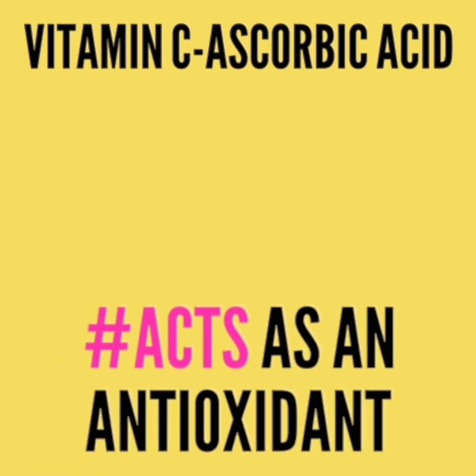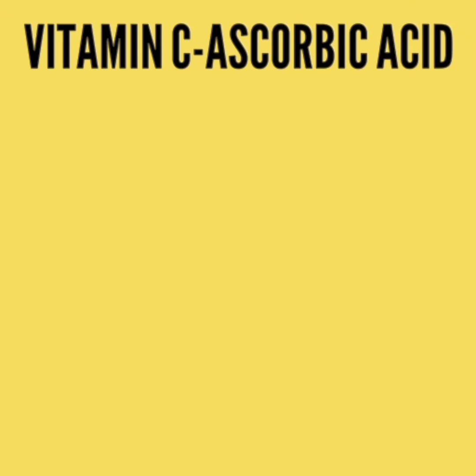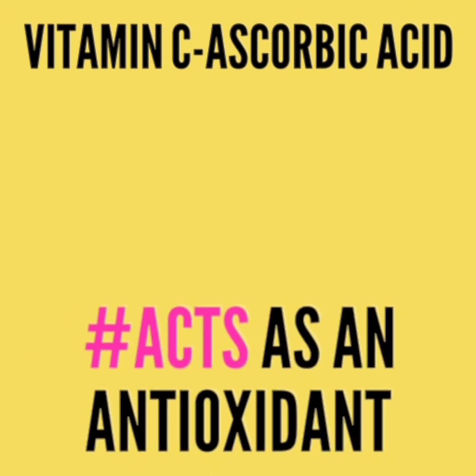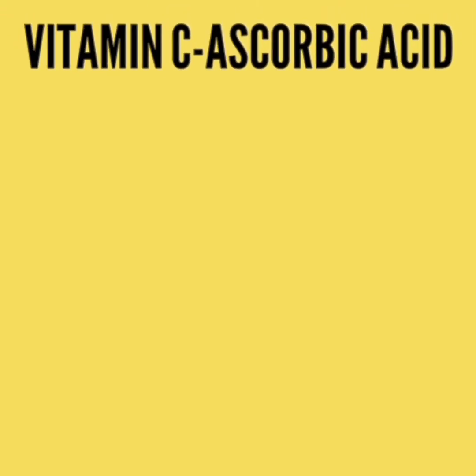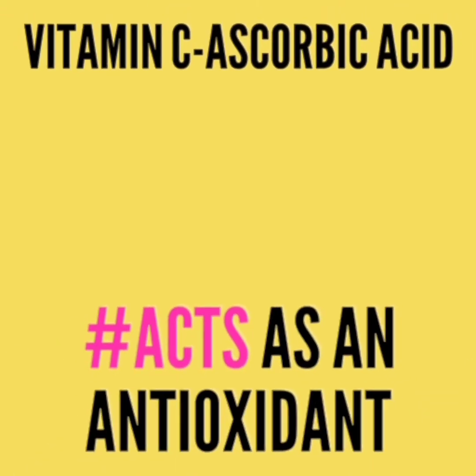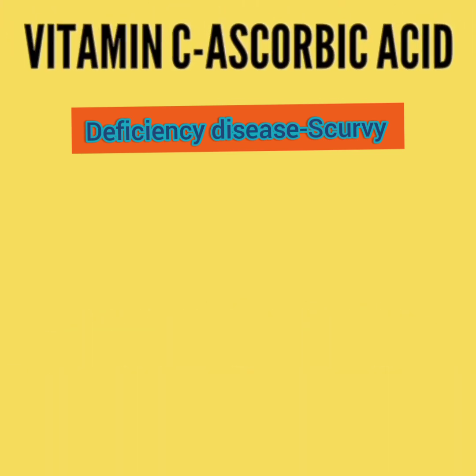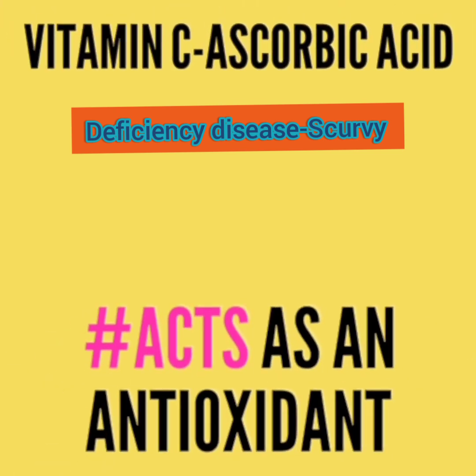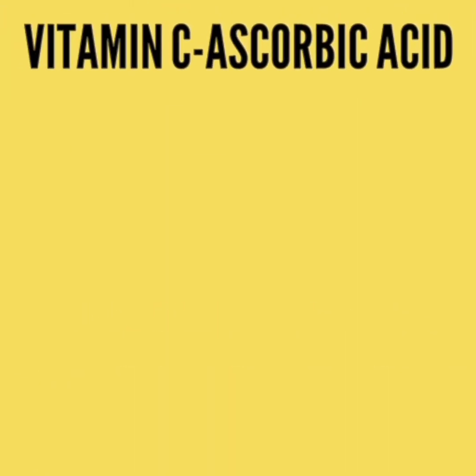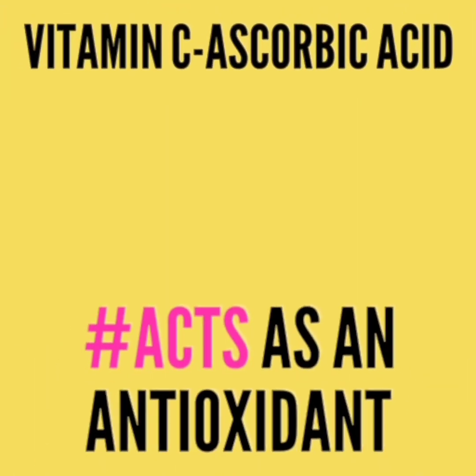Next, we will start with vitamin C. The chemical name of vitamin C is ascorbic acid. It also acts as an antioxidant, meaning it helps to protect cells from damage. The deficiency of vitamin C causes scurvy, which has symptoms like bleeding sores, tooth loss, anemia, and a reduced rate of healing for injuries. We should take more fruits and vegetables to maintain adequate ascorbic acid in our body.